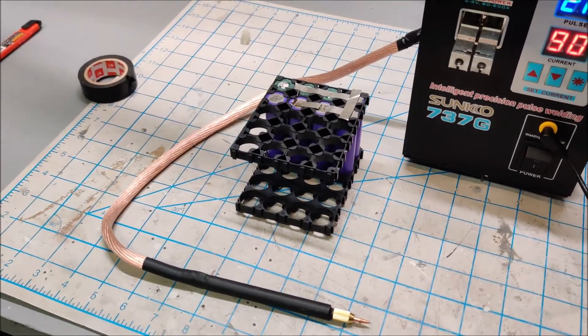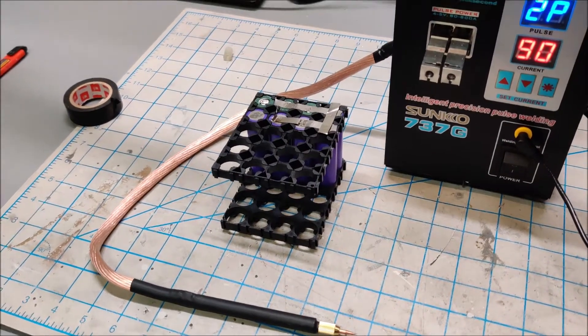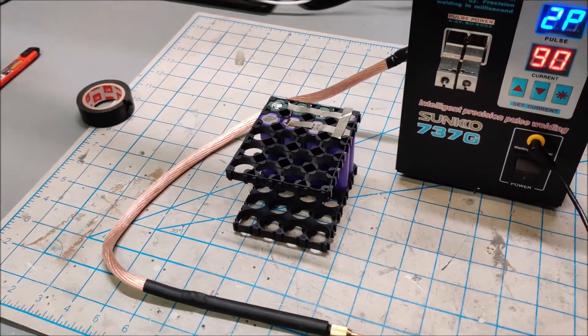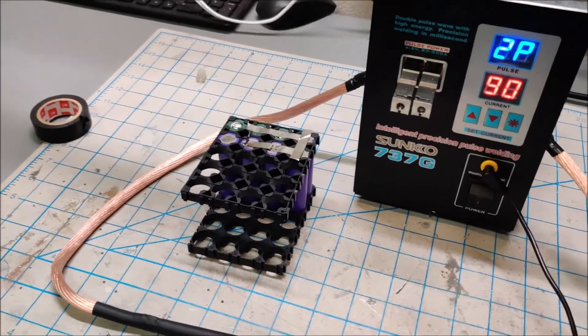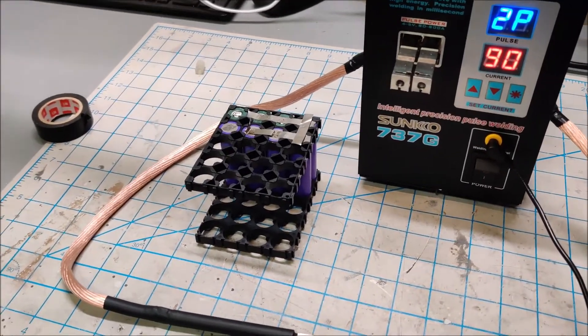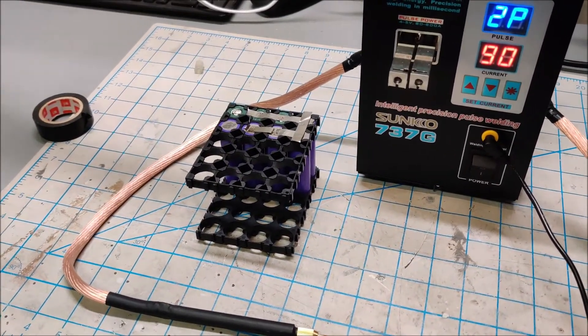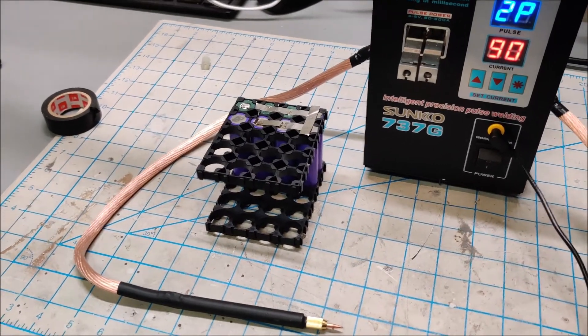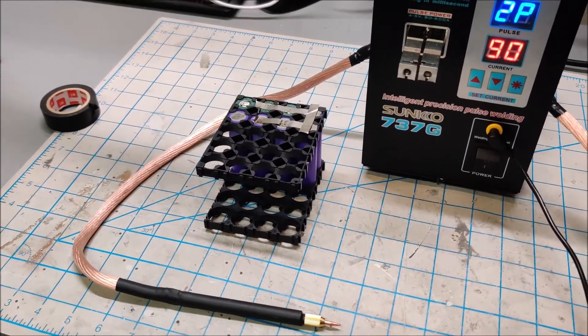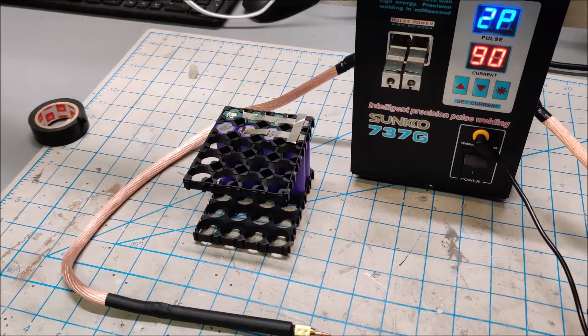It's sad how bad this machine is. It makes me much more appreciative of how good the PCB spot welder is, because with a few modifications and a decent battery, it's worlds better than this Sunco 737G.